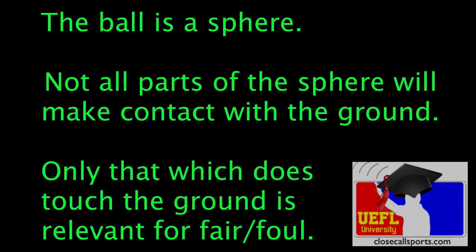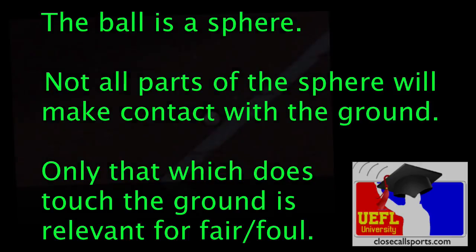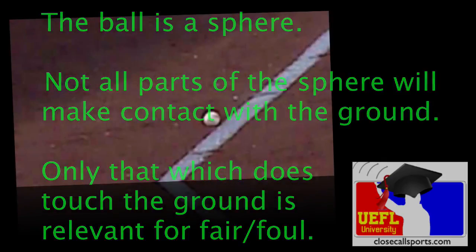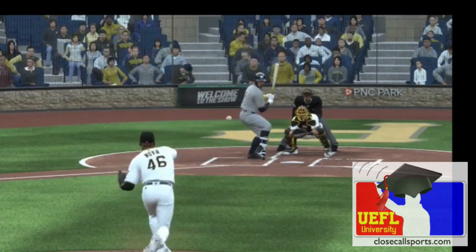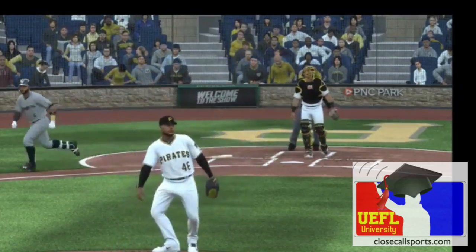Visually speaking — and this is why it's important for replay — a ball hovering over the line but only making physical contact with foul territory is a foul ball. So let's illustrate using our parallax angle effect.